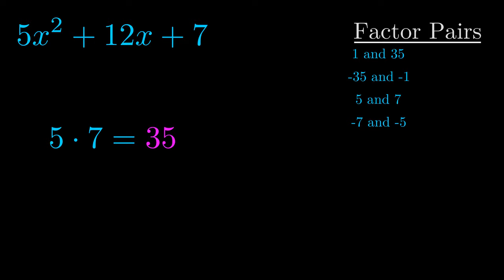The b value is the coefficient on the x term. That's the middle term, the one that we haven't done anything with yet. And really this is the only factor pair that we need.